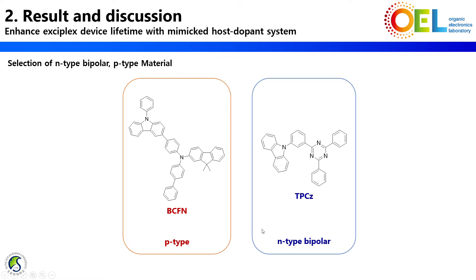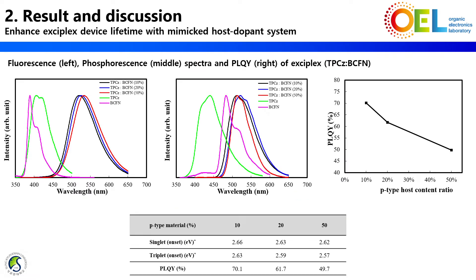Because the purpose is device lifetime enhancement, we selected the relatively stable P-type material BCFN and anti-bipolar material TPC-Z. Similar to previous work, mixing the two materials showed X-Plex emission. Singlet and triplet energy were increased as P-type concentration is decreased. PLQY was also increased from above 50% to 70% at the 10% P-type concentration ratio.